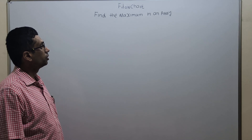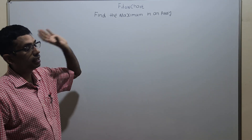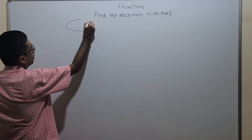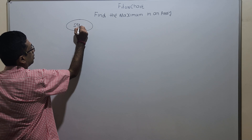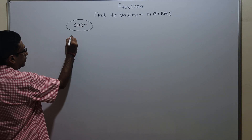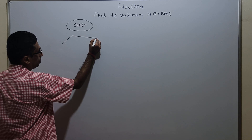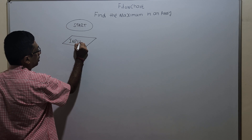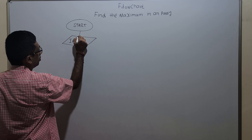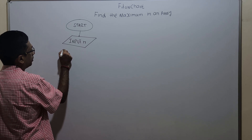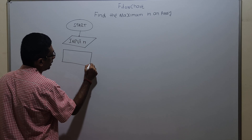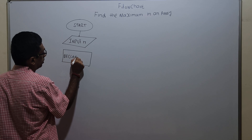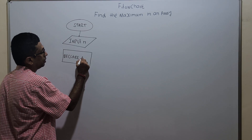Hello friends, we are going to draw a flowchart to find the maximum number in an array. This is the logical start of the flowchart. First, I am opening the input — taking n from the user. Then I am declaring the array with size n: declare a of n.